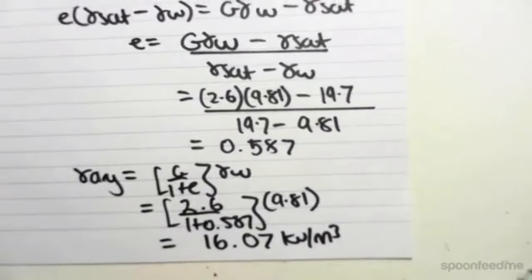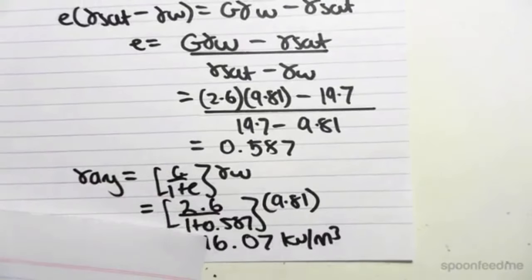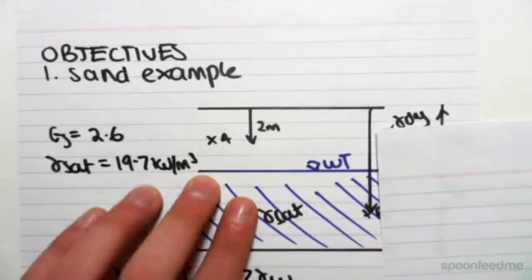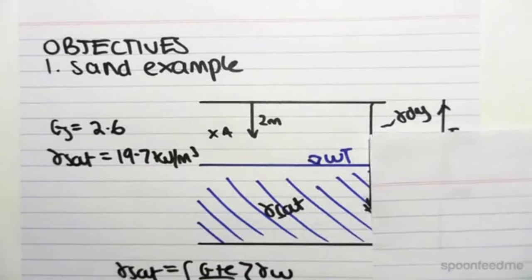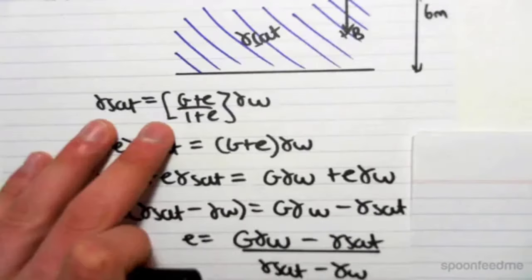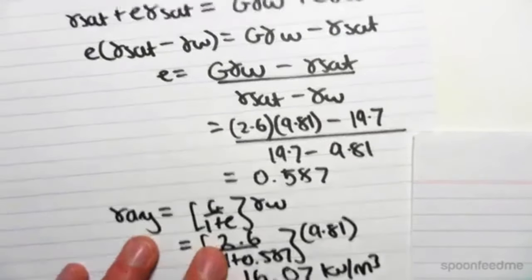So now, we want to find the total stress at point A. So at point A, we're 2 meters below, and our gamma dry is 16.07.